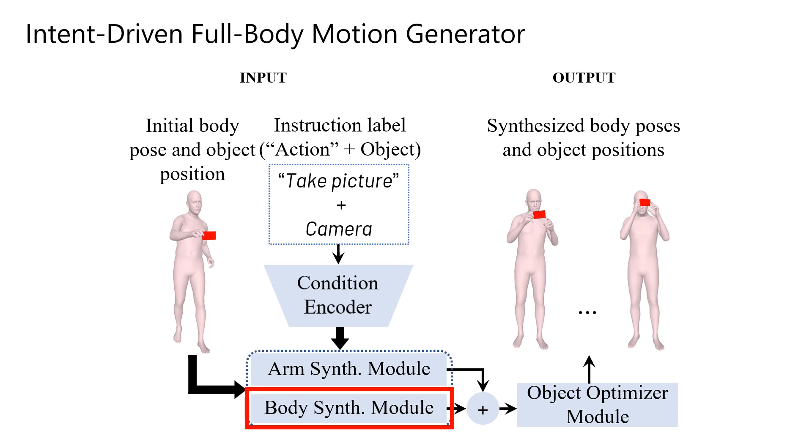We similarly design a body synthesis module that leverages the interactions between the arms and the rest of the body and uses self-attention to autoregressively synthesize movements of the full body. The arm and the body movements are concatenated and passed to our object optimizer module. We design this module using a surface-to-surface distance metric for each interacting hand-object pair, and optimize for the 6-DOF parameters of the object such that it plausibly fits within the hands of the synthesized character.